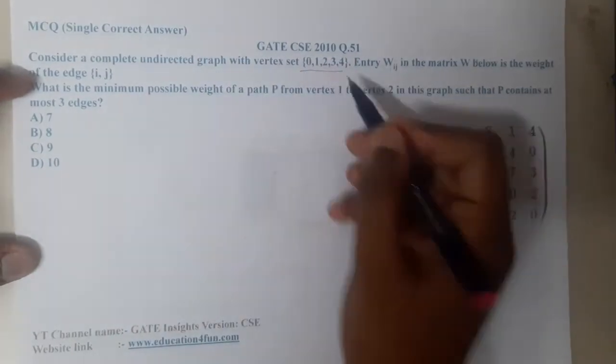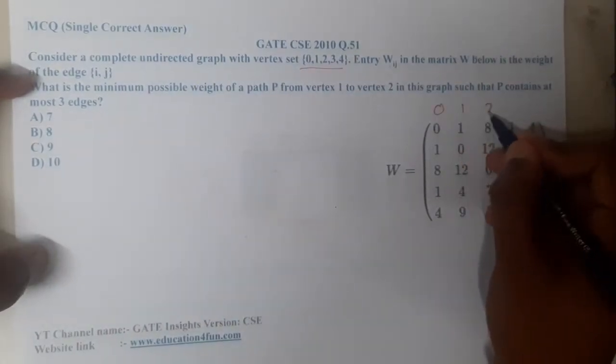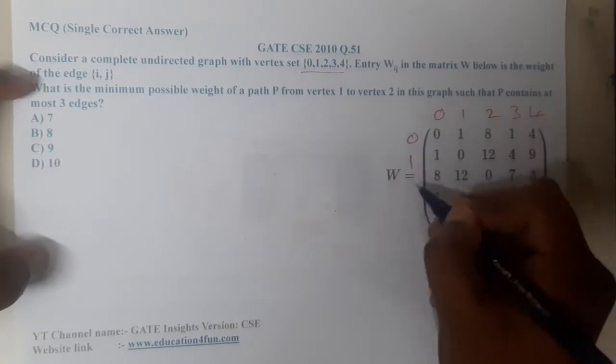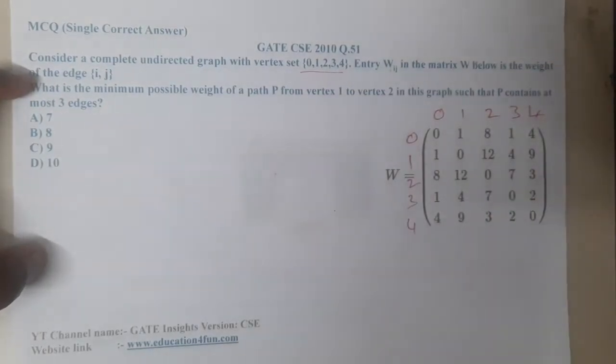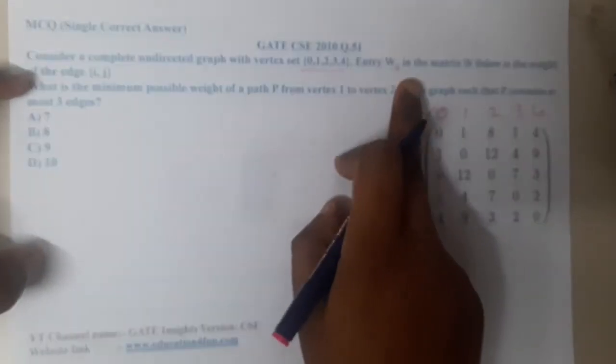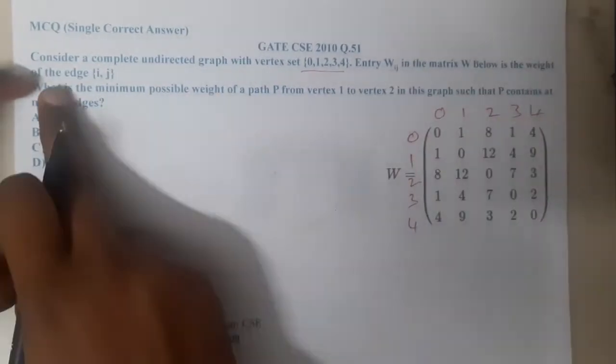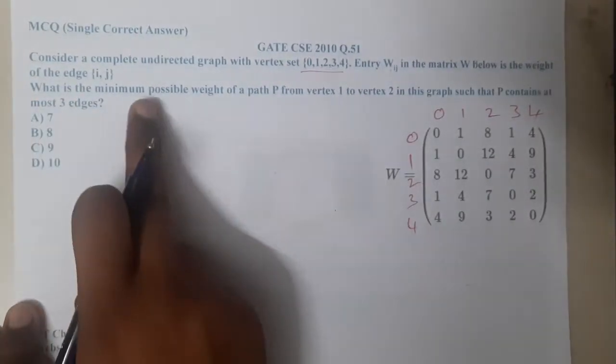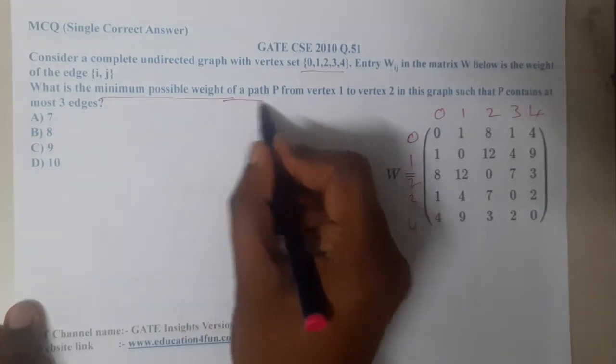So 0, 1, 2, 3, 4. They gave the weights of them with entries W_ij in the matrix W, which belongs to the weights of the edges between i and j. What is the minimum possible weight of a path from vertex 1 to 2?